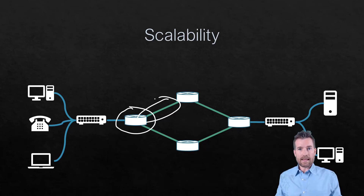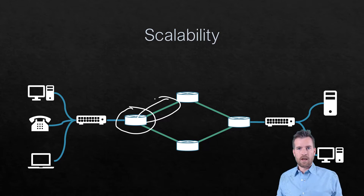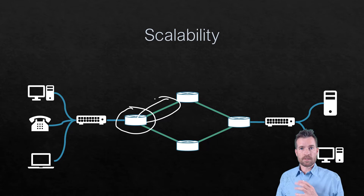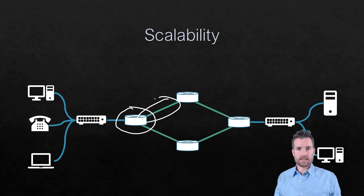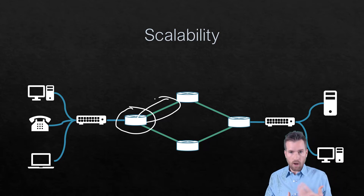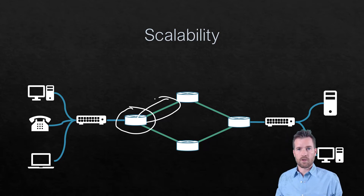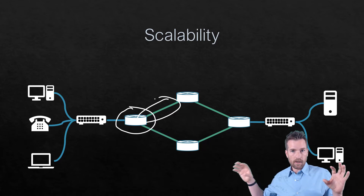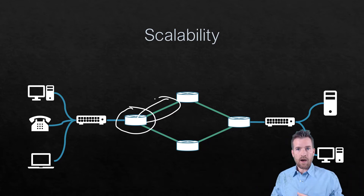Scaling out would be increasing the number of routers or connections we have. Another way we do this is with servers — scaling up would be adding more CPU or RAM to that server, while scaling out would be adding more servers behind a load balancer that distributes traffic among those servers. That's scalability: being able to scale out by adding more of a certain resource, or scale up by adding resources to what's already available.